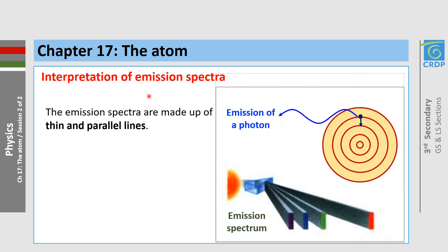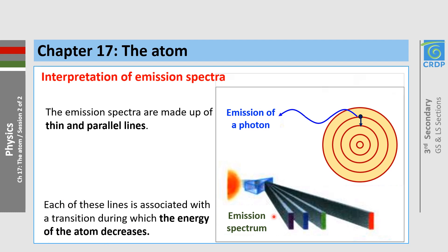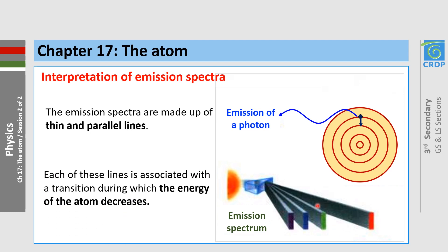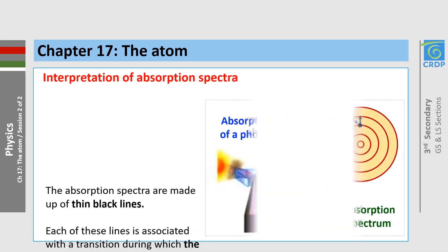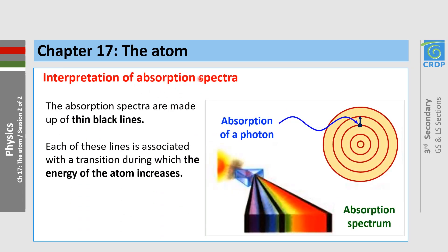How do we interpret emission spectra? The emission spectra are made up of thin and parallel lines. Each of these lines is associated with a transition during which the energy of the atom decreases. The absorption spectra are made of thin black lines. Each of these lines is associated with a transition during which the energy of the atom increases.